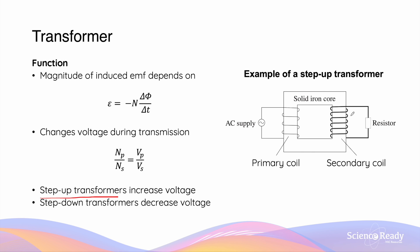An illustration of a step-up transformer is shown here. As you can see, there are more turns in the secondary coil than in the primary coil, which suggests that the voltage across the secondary coil will be higher than the voltage in the primary coil. If there are fewer turns in the secondary coil, the voltage will be lower, in which case we refer to this as a step-down transformer.